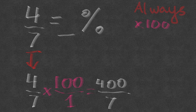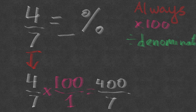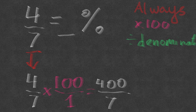Now I divide the denominator into the numerator. Let's zoom in so we have some space. We're following the same basic steps to convert the fraction into a percentage: multiply by 100, then divide the numerator by the denominator. The quotient is the percentage value, and we only need to take care of one decimal place.